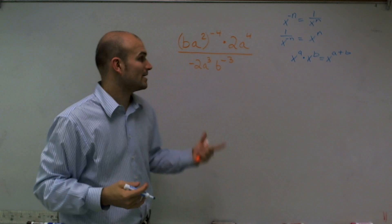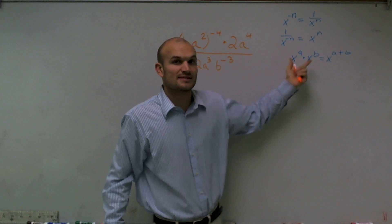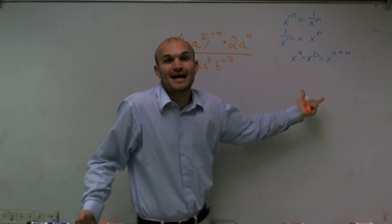that's going to equal x to the a plus b. What that means is if I'm going to multiply two numbers with the same base and they both have exponents, to solve that, I'm just going to add the exponents.